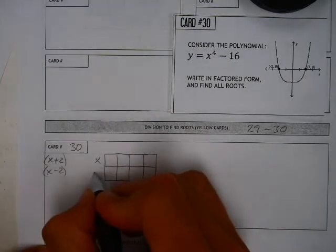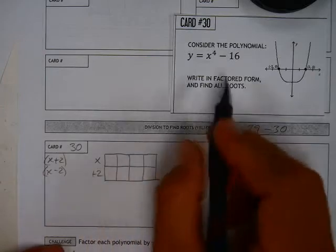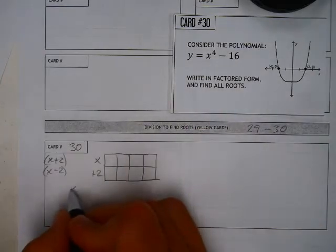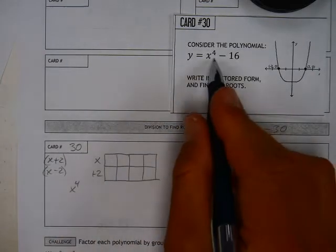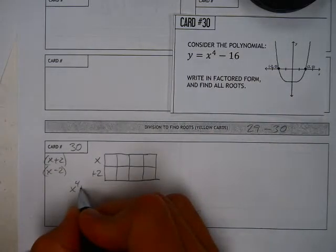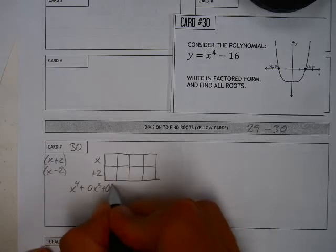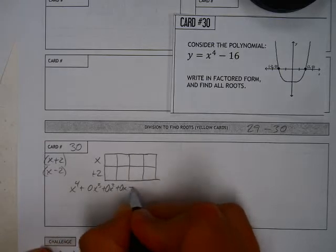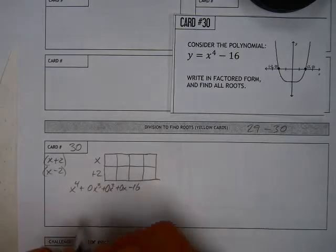So I'm going to start with my x plus 2, and I'm going to take this thing here and put it underneath. Now, there's my x to the 4th, and you'll notice that there's no other x's, but I have to account for all those. So I got a plus 0x to the 3rd, plus 0x squared, plus 0x minus 16, all right?